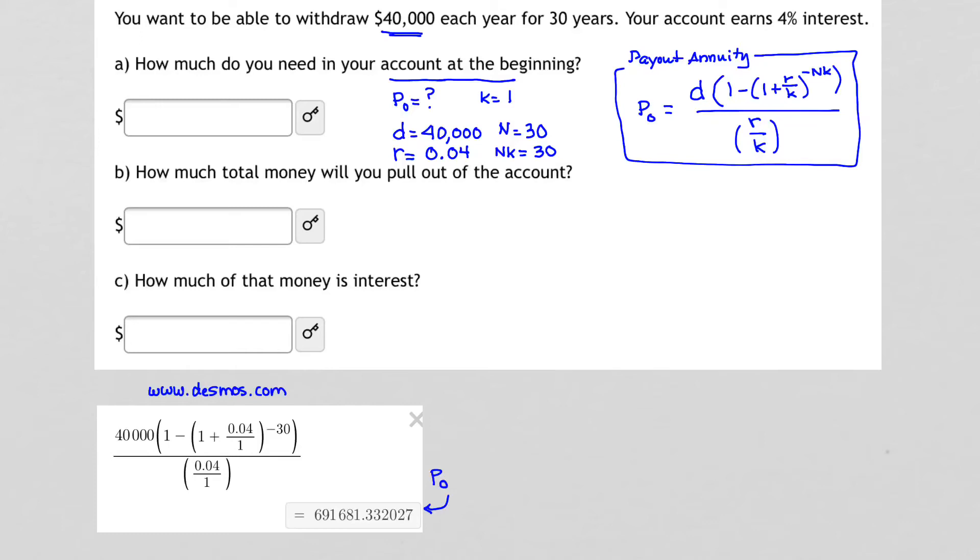That tells me that the amount in my account that I need to make those withdrawals is going to be $691,681.33. Okay, that completes part one.